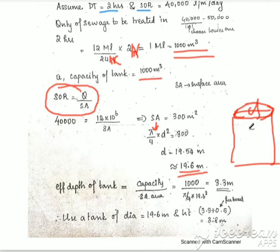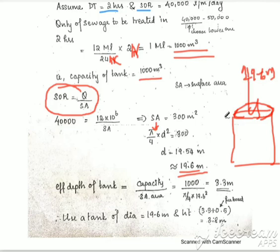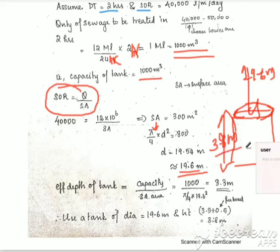So the dimensions of the circular sedimentation tank are: diameter 19.6 meters and overall depth 3.8 meters. Now we have completed the sedimentation tank design.